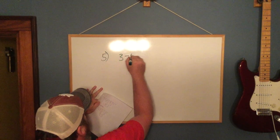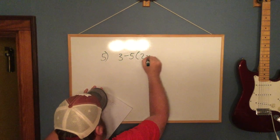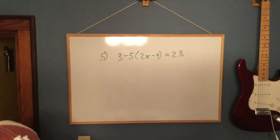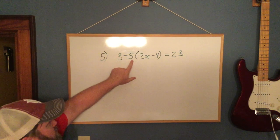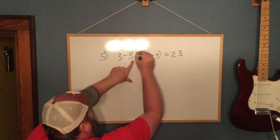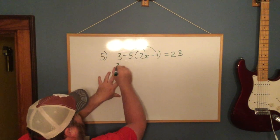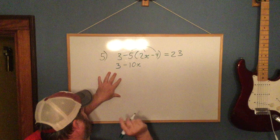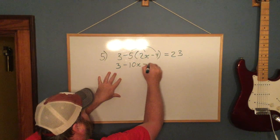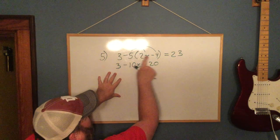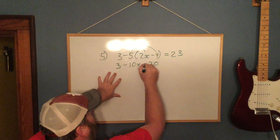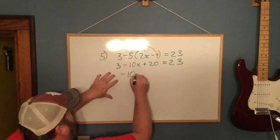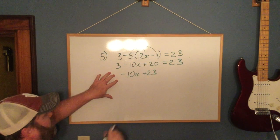One last example. Number 5: We have 3 minus 5 times the quantity of 2x minus 4 equals 23. Just like in the last example, you do not want to take 3 minus 5 first. You have to do the multiplication. So we're going to distribute not 5, but negative 5. I'm going to drop that 3. Negative 5 times 2x is negative 10x. Here's a big time mistake people make. They want to say that this is minus 20, but that's wrong. A negative 5 times a negative 4, a negative times a negative is a positive 20, equals 23. So combine like terms. Negative 10x plus 23 equals 23.